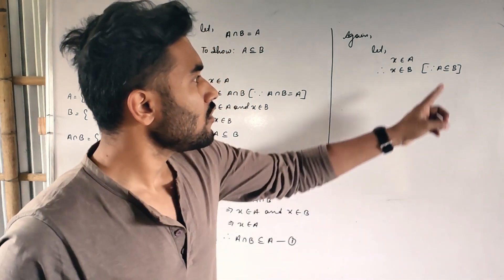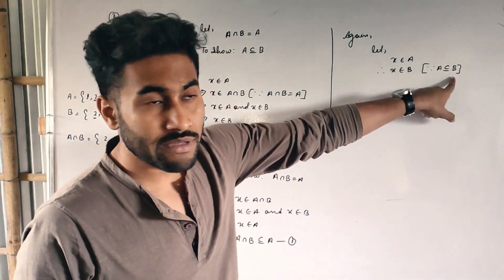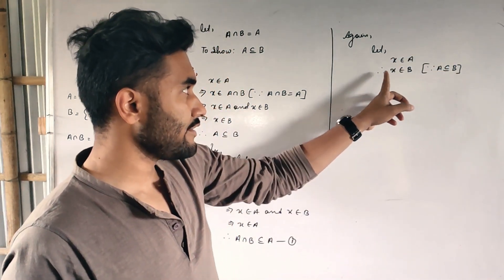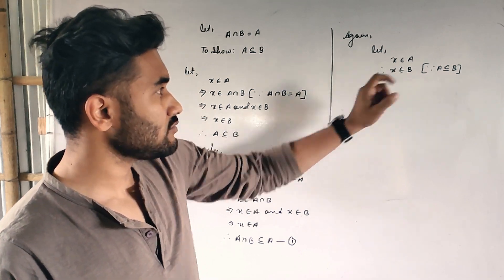Because since A is a subset of B, so the element A does it, obviously A element to go B does it. So the X is in B, 100%. Therefore X will have to stay in B. Therefore X belongs to B.